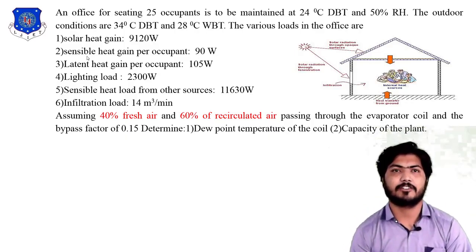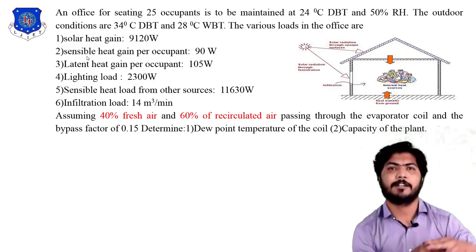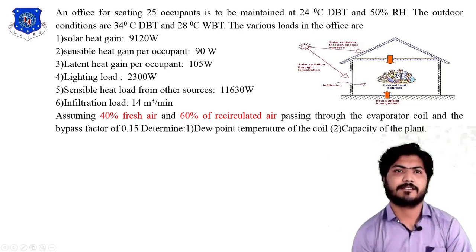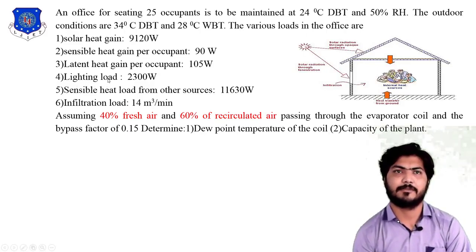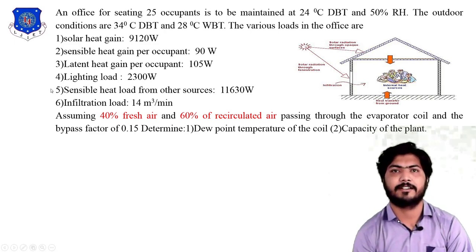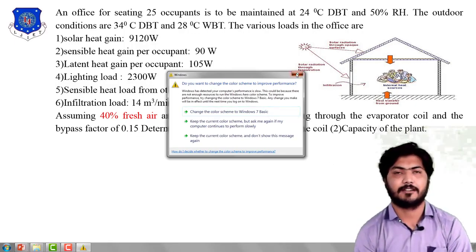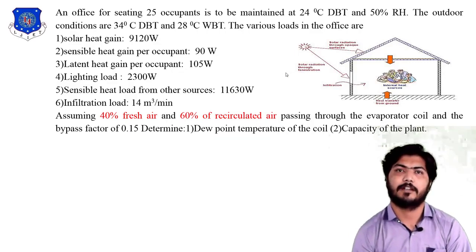First, we understand which load comes under sensible heat and which comes under latent heat, as already explained in the previous Load Analysis Lecture Part 1. Solar heat gain comes under sensible heat, sensible heat gain also comes under sensible heat, latent heat load comes under latent heat, lighting load comes under sensible heat gain. Infiltration load of 14 cubic meters per minute is the air velocity which comes inside the room through cracks, windows, or lower openings.